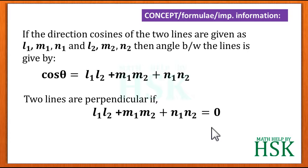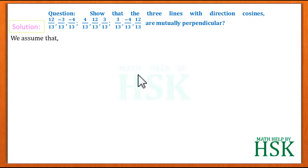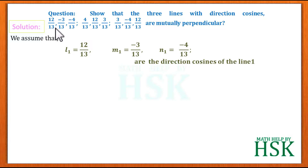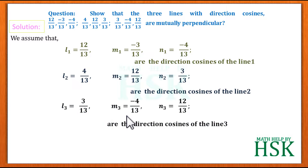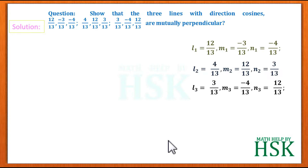We apply this concept to solve the question. We assume the first line has direction cosines l1, m1, n1 given by 12/13, −3/13, and −4/13. Similarly, l2, m2, n2 are the direction cosines of the second line and l3, m3, n3 are the direction cosines of the third line. We write aside the values of each.